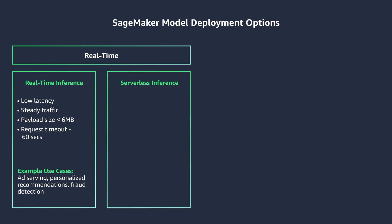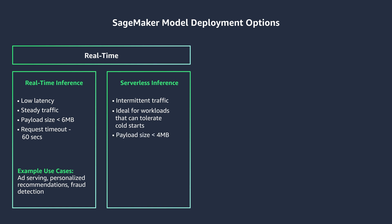Your second option is SageMaker serverless inference. It's best suitable for workloads with intermittent or unpredictable traffic patterns. Unlike the real-time scenario, in this option you have idle periods between traffic bursts and your workload should be able to tolerate cold starts. Serverless inference automatically launches compute resources and scales depending on traffic, eliminating the need to choose instance types or manage scaling policies — allowing you to only pay for what you use. It can support payload sizes up to 4 MB and processing time up to 60 seconds. Examples include test workloads, extracting and analyzing data from documents, form processing, and chatbots with unpredictable usage times.